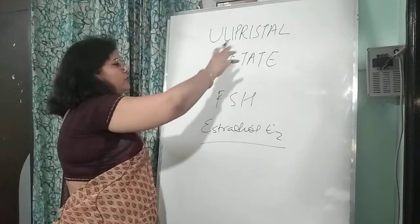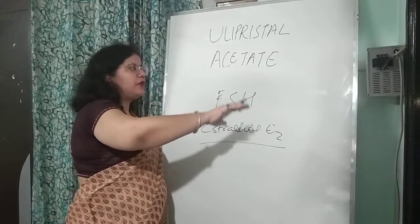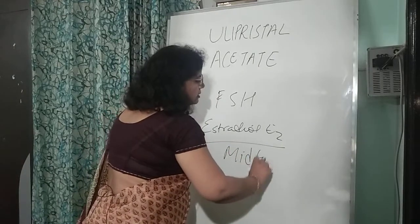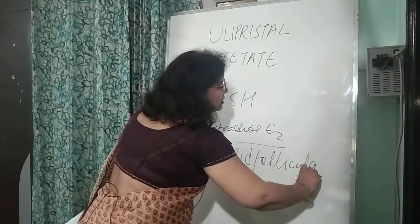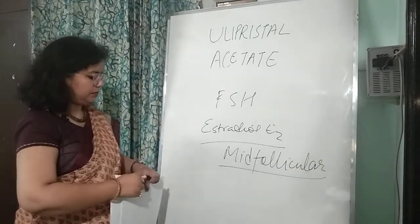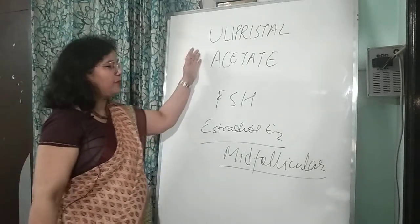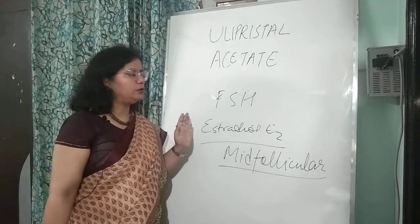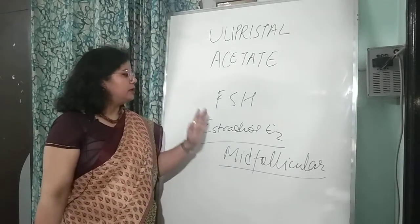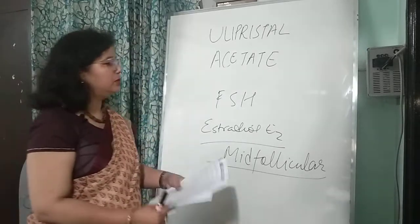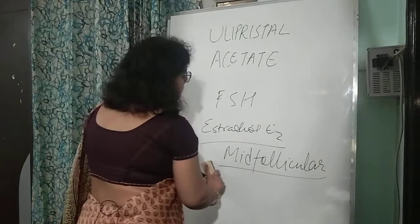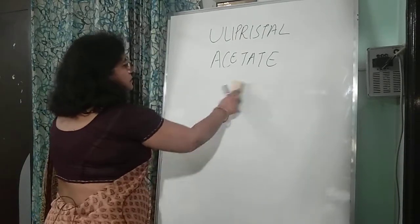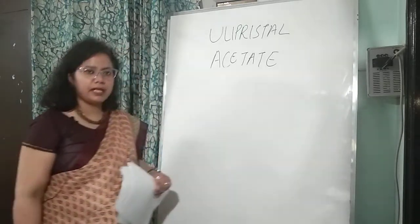With ulipristal acetate, we get a beneficial reduction in fibroid volume, but estradiol levels are not much altered — they are maintained at mid-follicular levels. So hot flushes are not very common, and bones are preserved. This is the key advantage of this drug over GnRH analogs.